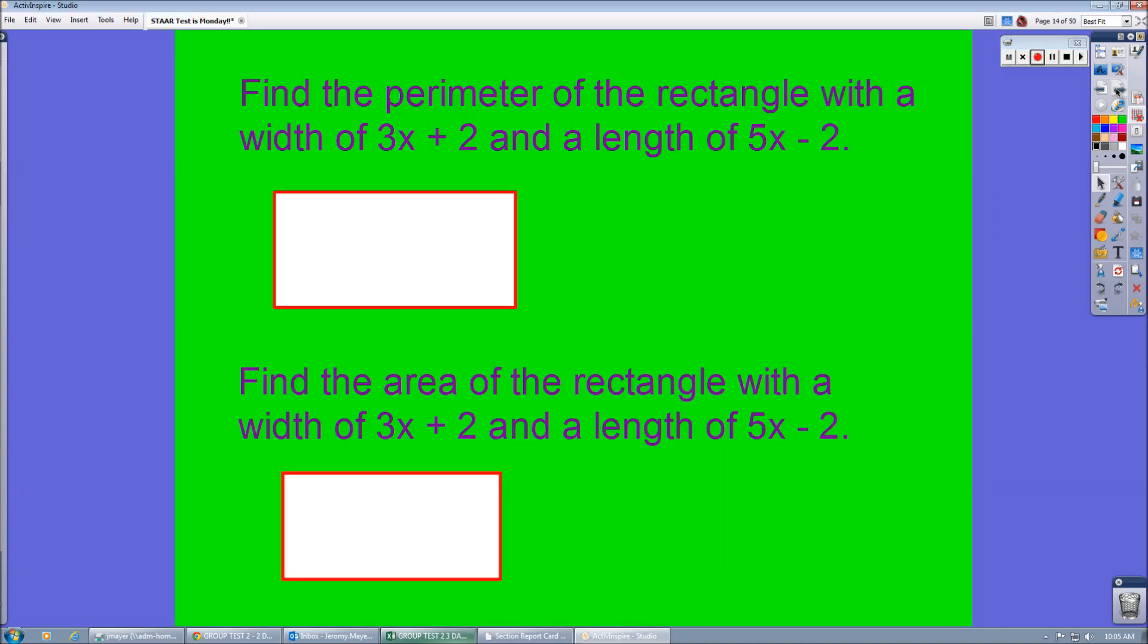Perimeter of a rectangle, you must add all four sides. So you're going to add the width twice and the length twice. Be careful with that.